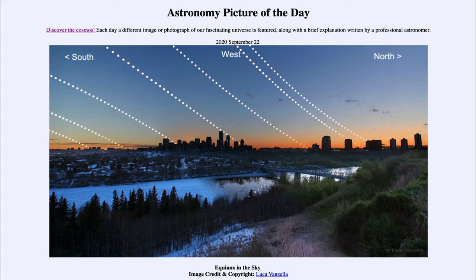So what do we see here? We're seeing images from seven different days of sunsets as seen from Edmonton in Canada. Each of the lines of little dots are actually paths of the sun — the path the sun took on those days as it was setting. The middle of these three lines is actually what occurred on the equinox.